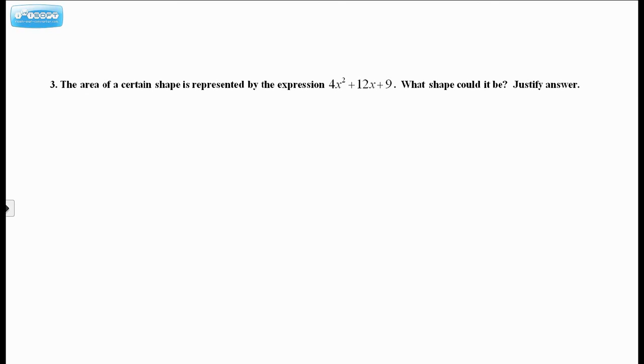Number 3, the area of a certain shape is represented by the expression 4x squared plus 12x plus 9. What shape could it be? Justify your answer. Now, key word here, could it be. It doesn't ask, what shape must it be. As far as I'm concerned, it could be any shape we want. But we want to be able to say what shape it could be and then give a good explanation, i.e. justify our answer. Well, we've been doing a lot of factoring, so chances are maybe factoring has something to do with it. So let's see if we can actually factor this trinomial.